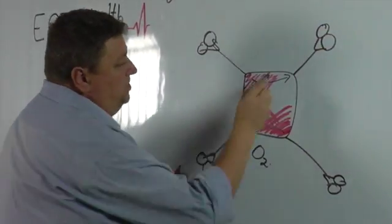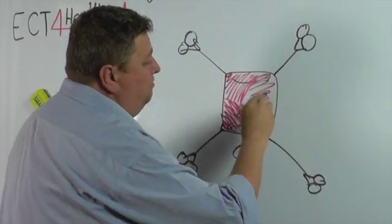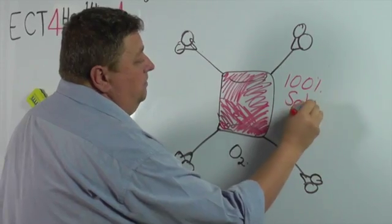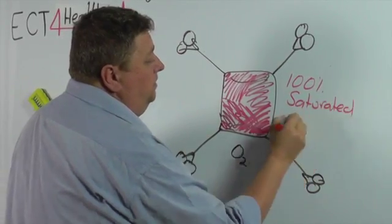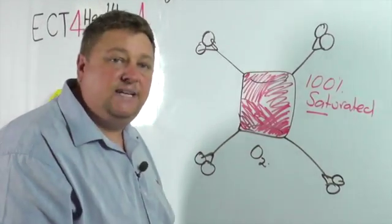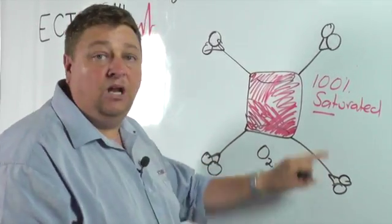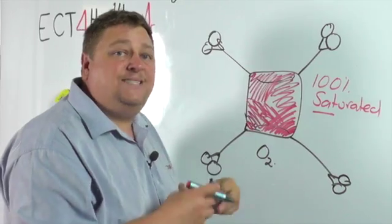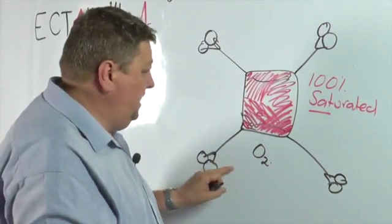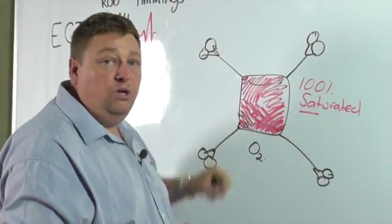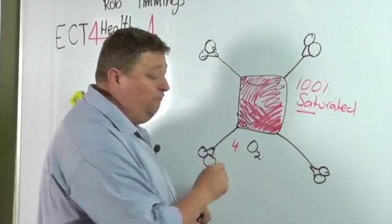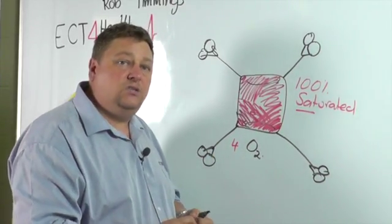That's what we're looking for when we measure someone's sats. We're looking at hemoglobins, how saturated with oxygen a hemoglobin is. Each individual hemoglobin molecule is considered to be 100% saturated when it has four oxygens attached to it.